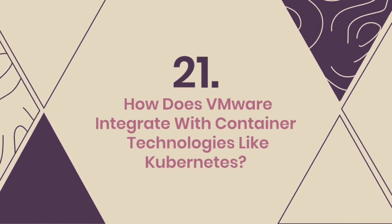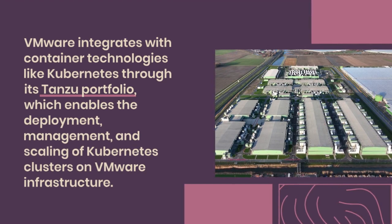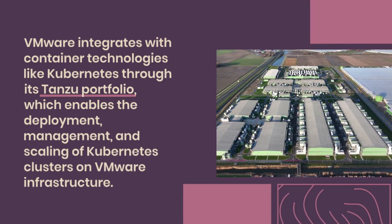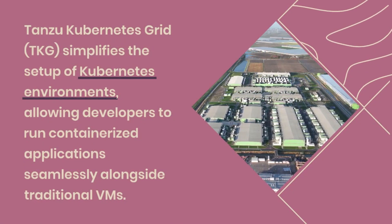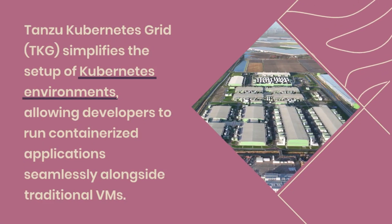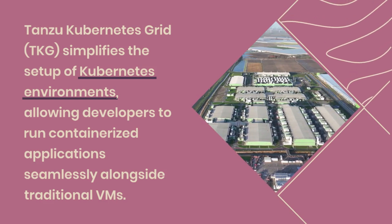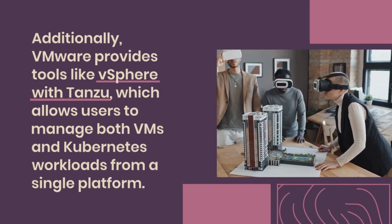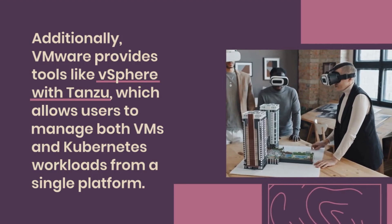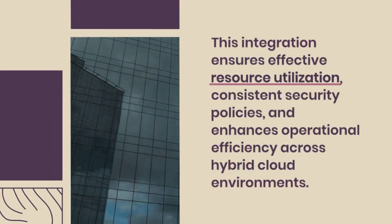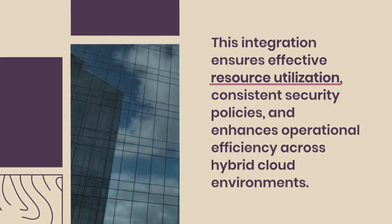Question 21: How does VMware integrate with container technologies like Kubernetes? VMware integrates with container technologies like Kubernetes through its Tanzu portfolio, which enables the deployment, management, and scaling of Kubernetes clusters on VMware infrastructure. Tanzu Kubernetes Grid (TKG) simplifies the setup of Kubernetes environments, allowing developers to run containerized applications seamlessly alongside traditional VMs. Additionally, VMware provides tools like vSphere with Tanzu, which allows users to manage both VMs and Kubernetes workloads from a single platform. This integration ensures effective resource utilization, consistent security policies, and enhances operational efficiency across hybrid cloud environments.